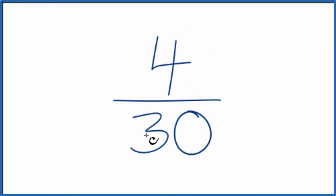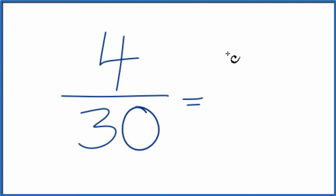Since 4 doesn't go into 30 evenly, let's just divide 4 by 2. So 4 divided by 2 is 2, and then divide 30 by 2. That gives us 15.